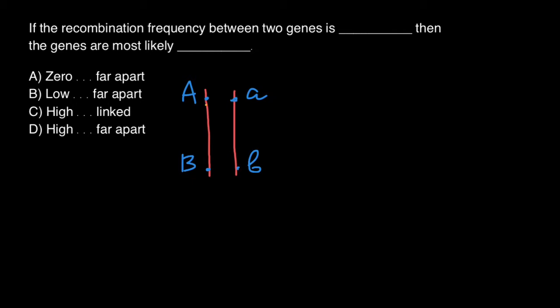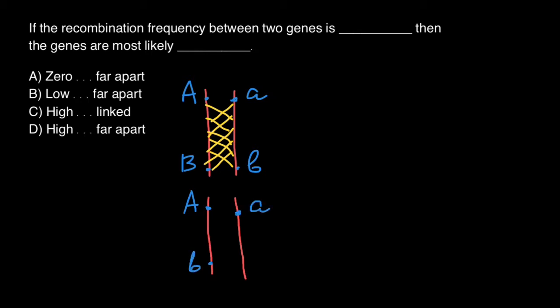During meiosis, crossing over may happen in multiple places between gene A and B. And as a result, we can get new recombinant chromosomes. For example, we can get a chromosome where on the same chromosome we are going to get dominant allele A and recessive allele B, and for example, recessive allele A and dominant allele B.